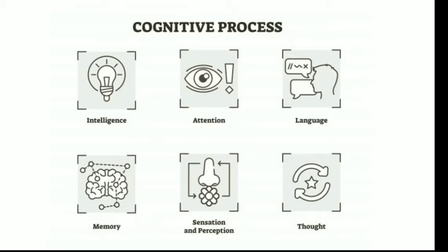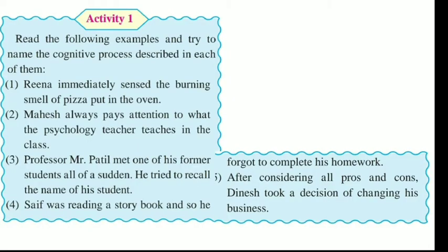In this chapter we are going to talk about attention first and then carry on with other cognitive processes. To understand it in more detail, we will read Activity 1. Read the following example and try to name the cognitive processes described in each of them. I am going to read these 5 examples and you have to name which cognitive process has been used.